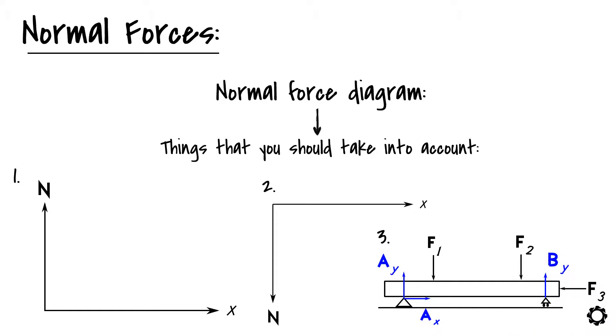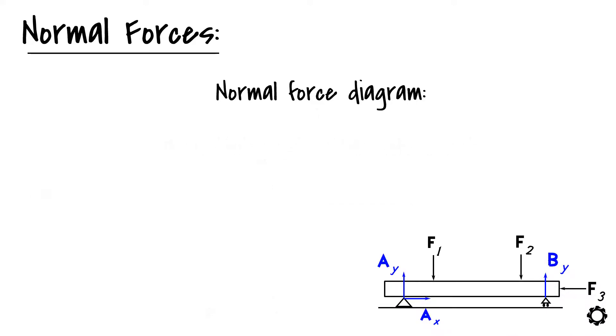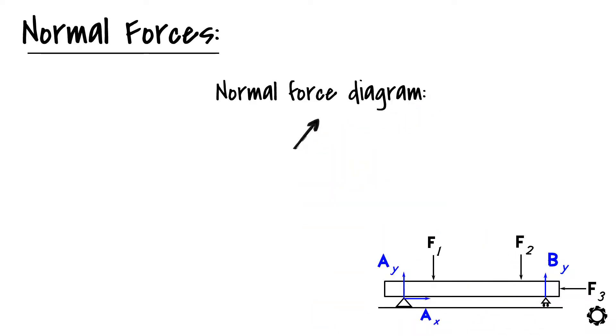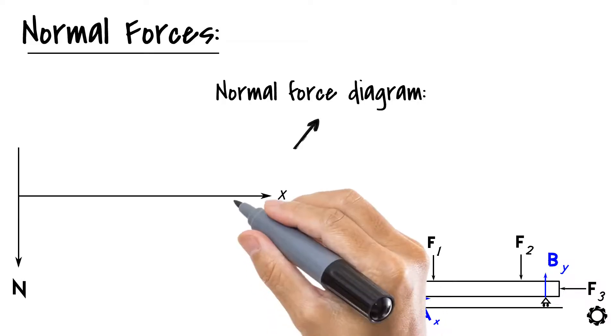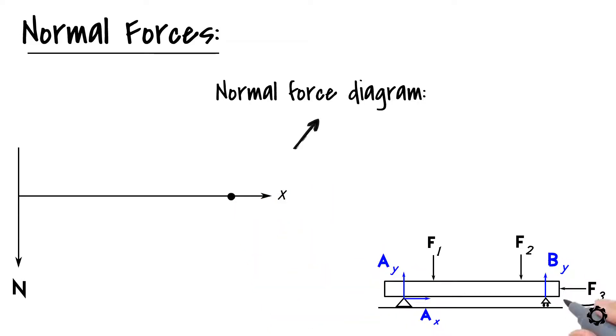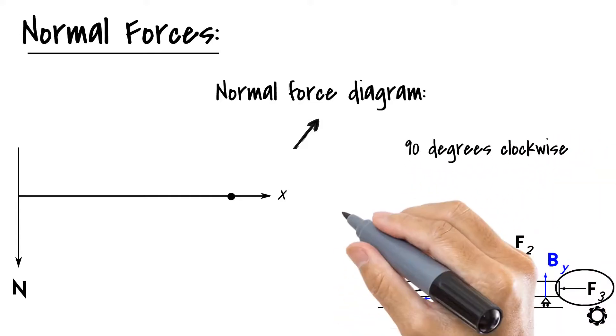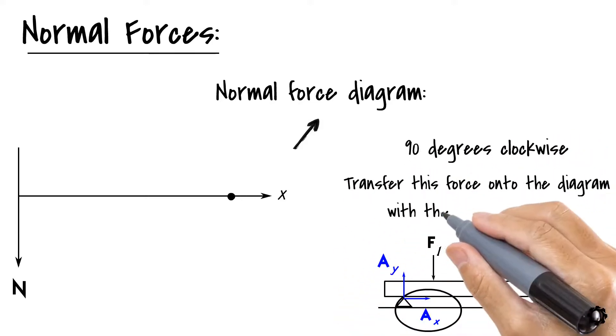Now that the things that you should consider when drawing the normal force diagram are explained, let's go through the steps to successfully draw the diagram that you can apply for different cases. In all cases, start the observation from the right end of the structure. Then turn each horizontal force that you encounter 90 degrees clockwise and transfer this force onto the diagram with the right proportion.